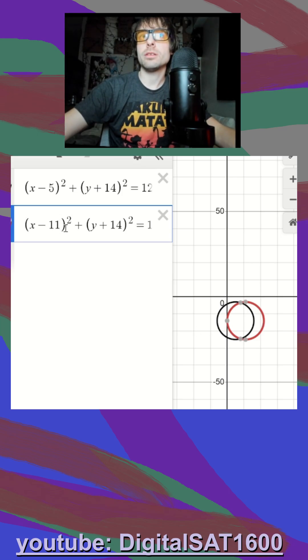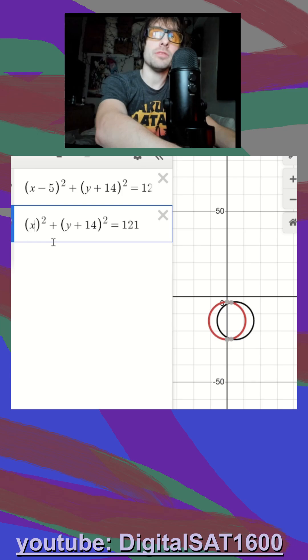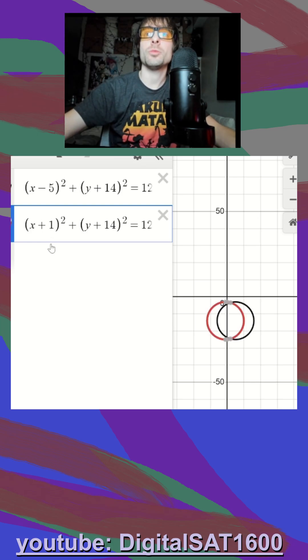So remember, if it's left and right, we mess with the x. And we always want to do the opposite. So if it's left six, we add six, which gets us positive one, that shifts us to the left six.